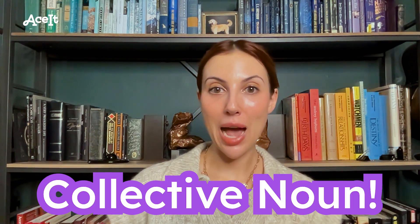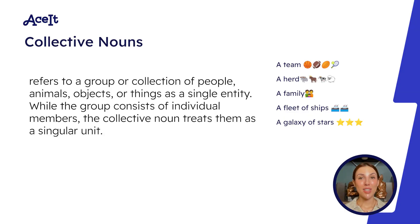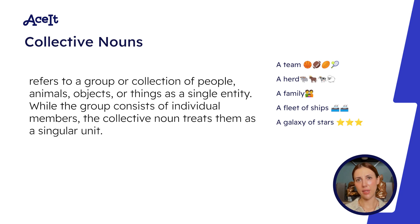What does this have to do with the SAT and ACT? Well, when you refer to this group of bats as a colony, cauldron, or cloud, you are using a collective noun, and that is our topic for today. A collective noun is a noun that refers to a group or collection of people, animals, objects, or things as a single entity.